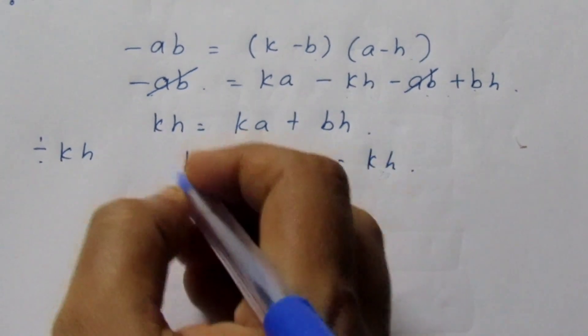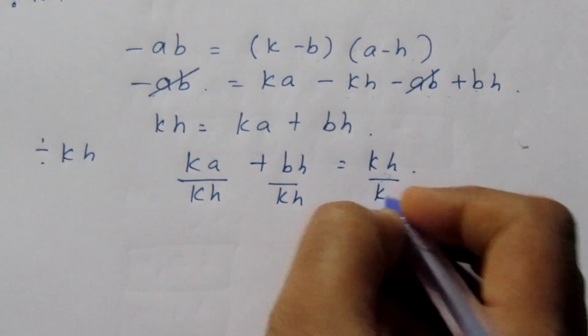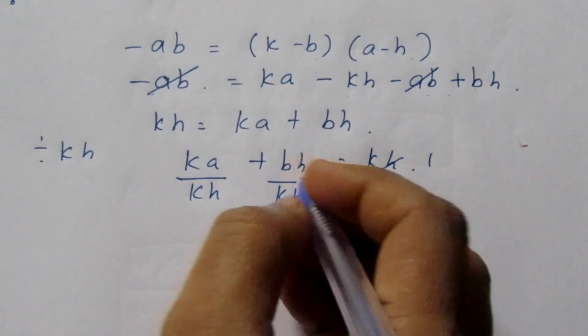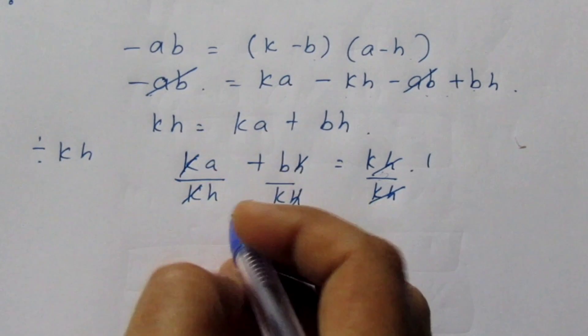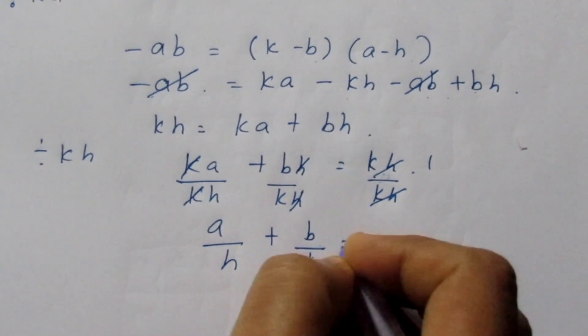Here this part will become 1. So for that reason, I am going to divide all the terms by kh. Here this gets cancelled, it becomes 1. h is cancelled, k and k get cancelled. Now a/h + b/k = 1.